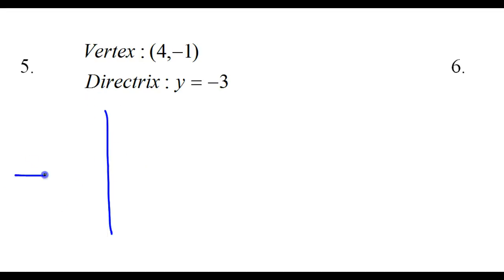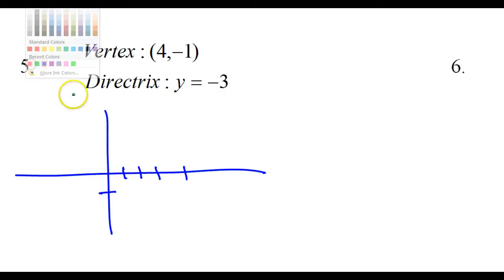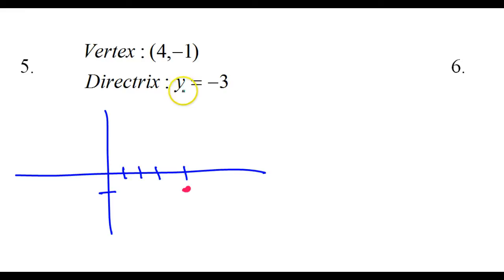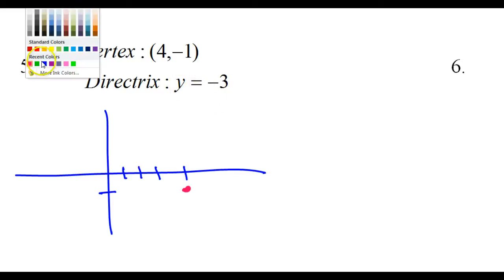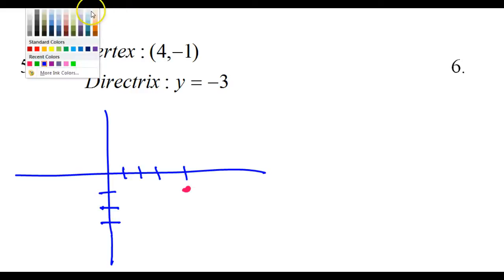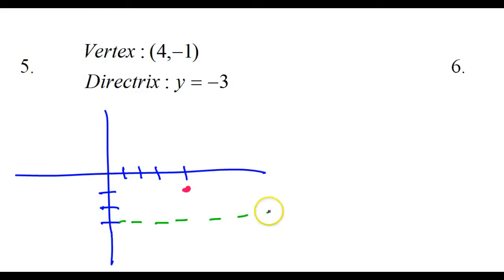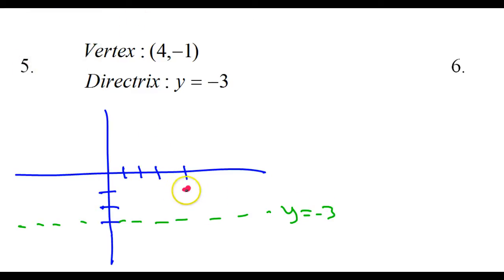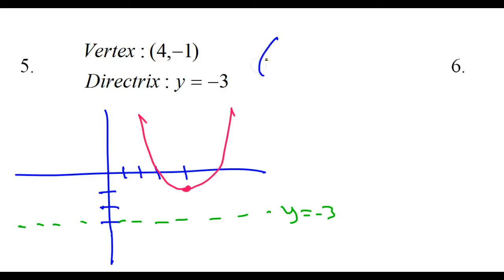Number 5. The vertex is at (4, -1). The directrix is at y = -3. Now y equals is a horizontal line. I know the parabola has to be facing away from the directrix. The parabola is never going to cross the directrix. So it must be facing up, away from the directrix. With the parabola facing up, that tells me it's going to be one of those normal ones where the x is squared.